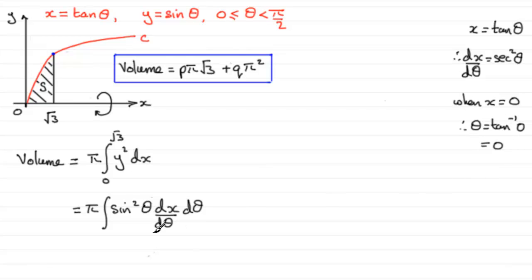We can do the same thing for the upper limit here when x is root three. When x is root three, we've got root three equals tan theta. So therefore, theta would be equal to the inverse tan of root three. And what is the inverse tan of root three? Well, it's the equivalent of 60 degrees. It's pi upon three radians. So we can put pi upon three up there as that upper limit.